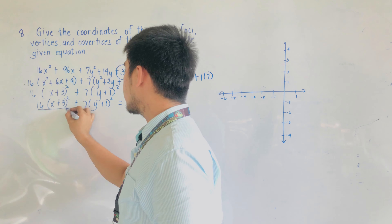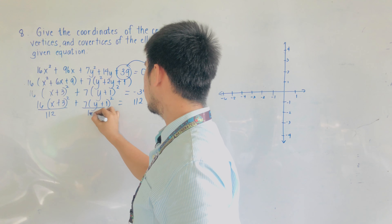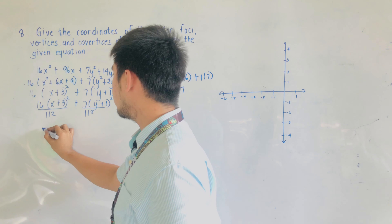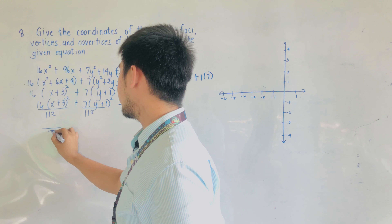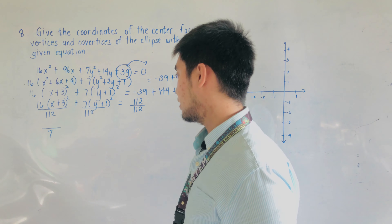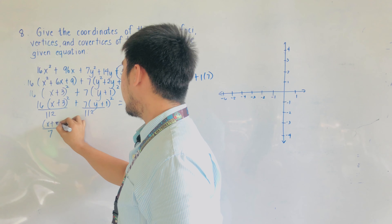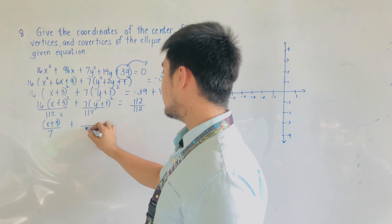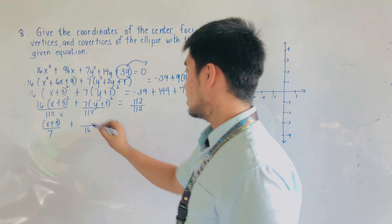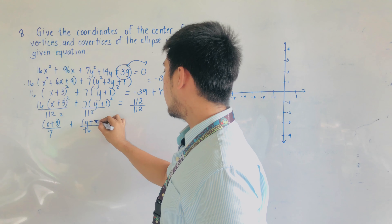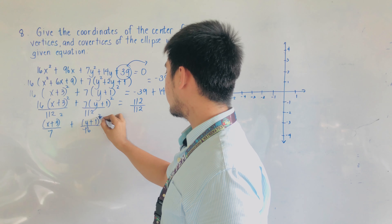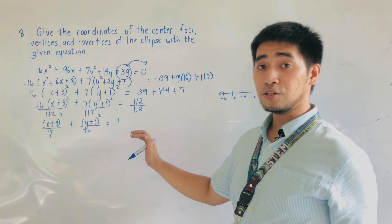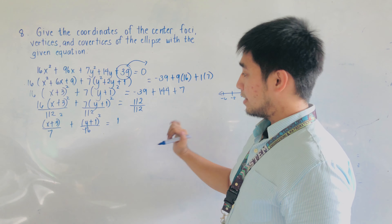Dividing both sides by 112, we get 112 divided by 16 equals 7 under the (x plus 3) squared term, and 112 divided by 7 equals 16 under the (y plus 1) squared term. This gives us the standard equation of an ellipse equal to 1.